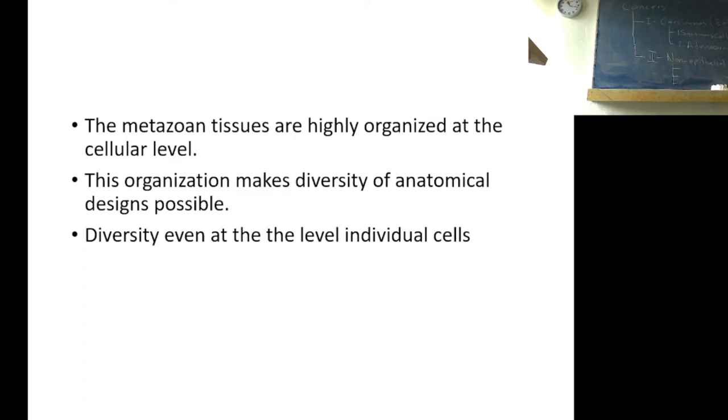Having different cell phenotypes and organizing them in special architectures, the metazoan body is possible only doing this. Diversity even at the level of individual cells. There are hundreds of different cell phenotypes in your body, in every animal's body.